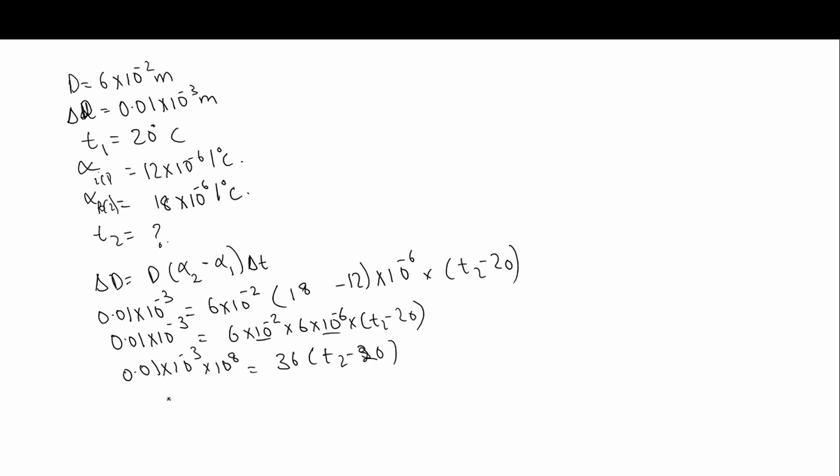This becomes 1000 is equal to 36 T2 minus 20. So 1000 divided by 36 is approximately equal to 28. It is actually 27.7. I have approximated it to 28 for easier calculation. Is equal to T2 minus 20. So T2 is equal to 48 degrees Celsius.